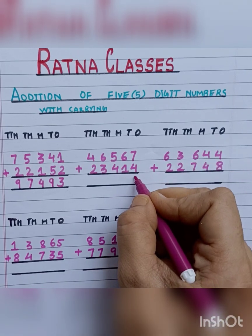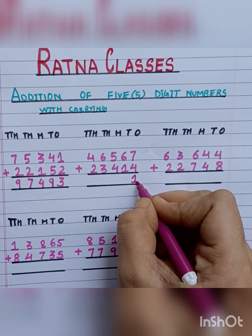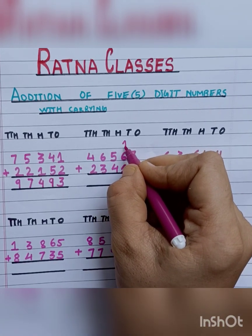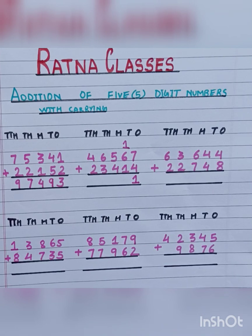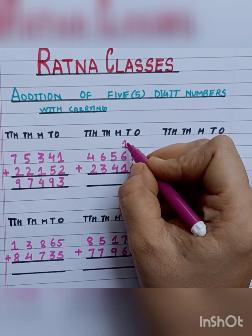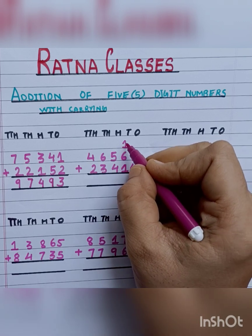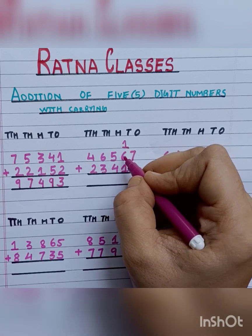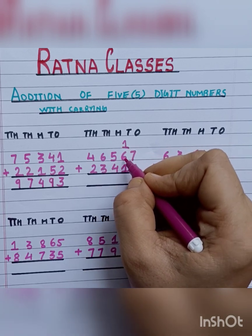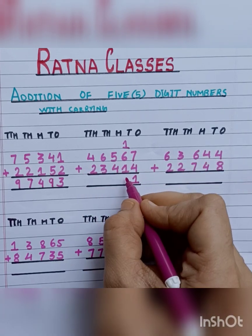11 is a 2-digit number, so we will write 1 here and carry 1. Now we will add the digits on the tens place: 1 carry, plus 6, plus 1. 1 plus 6 is 7, and 7 plus 1 is 8.